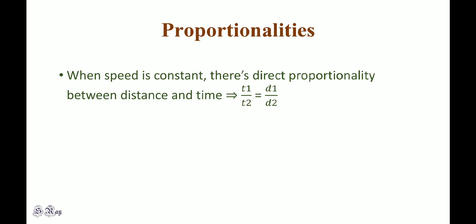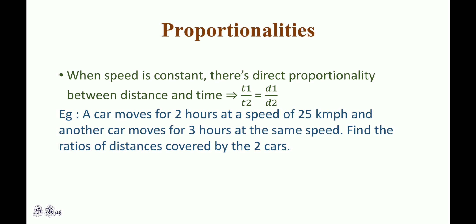In previous videos, we saw proportionality between speed and time — they are inversely proportional. The relationship between distance and time is directly proportional, provided speed is constant. That is d1 by d2 is equal to t1 by t2. So if a car moves for 2 hours at 25 km/h and another car moves for 3 hours at the same speed, then the ratio of distances covered is 2:3.